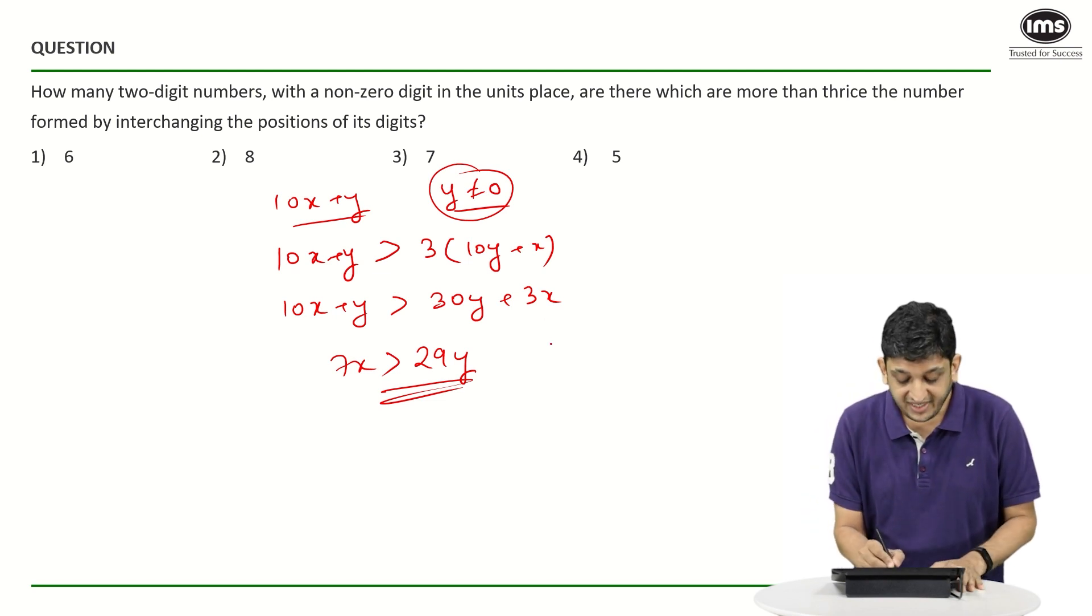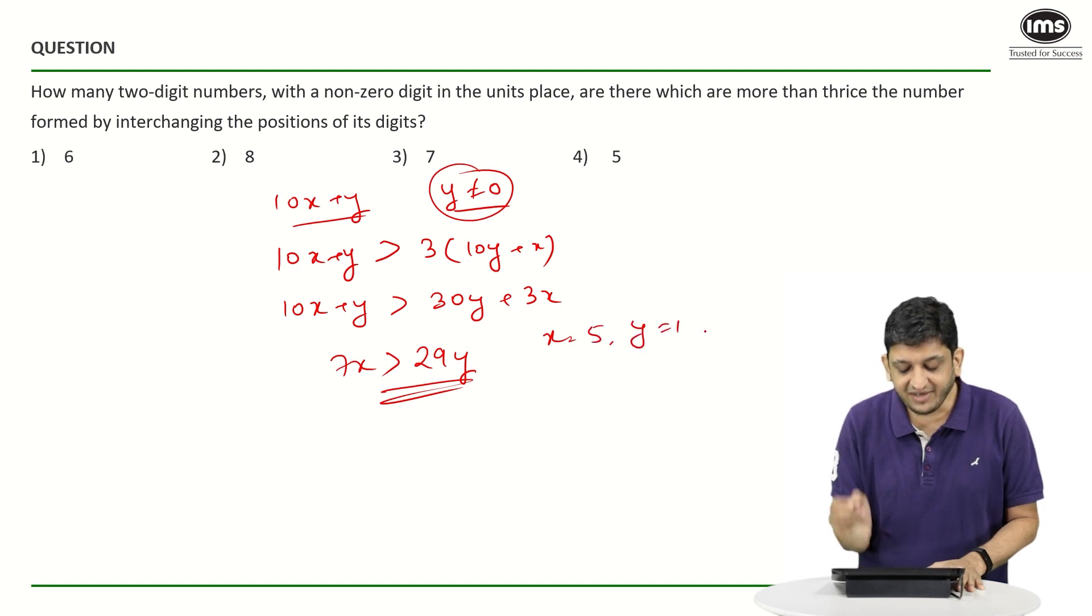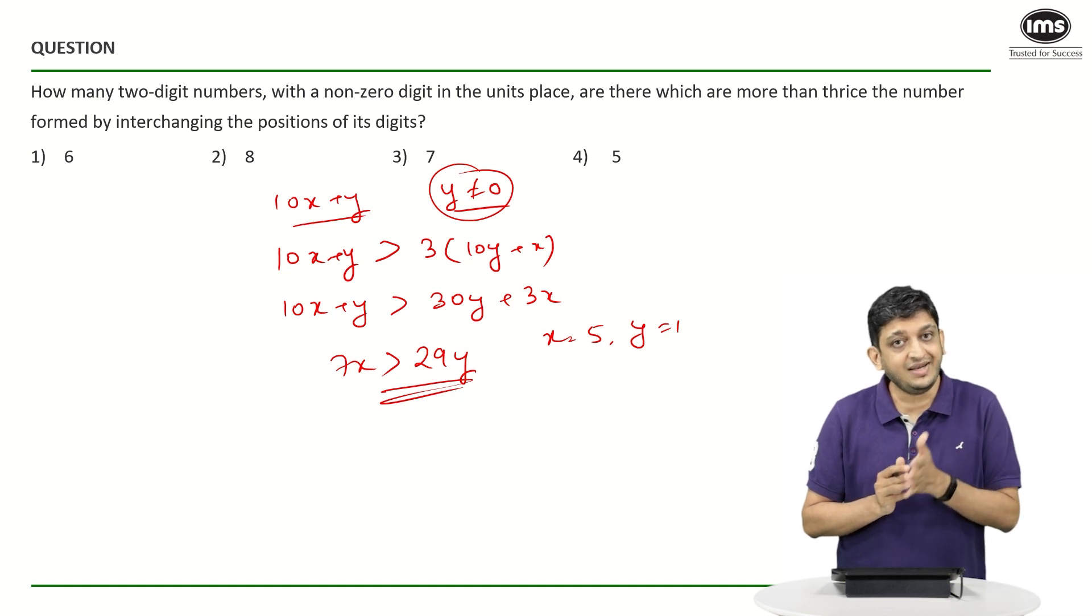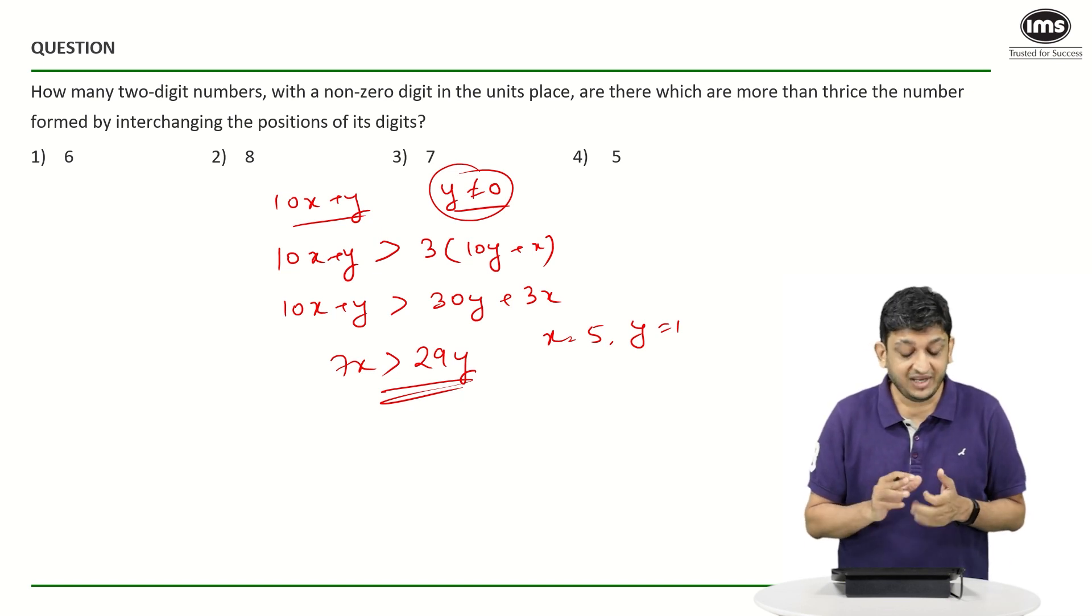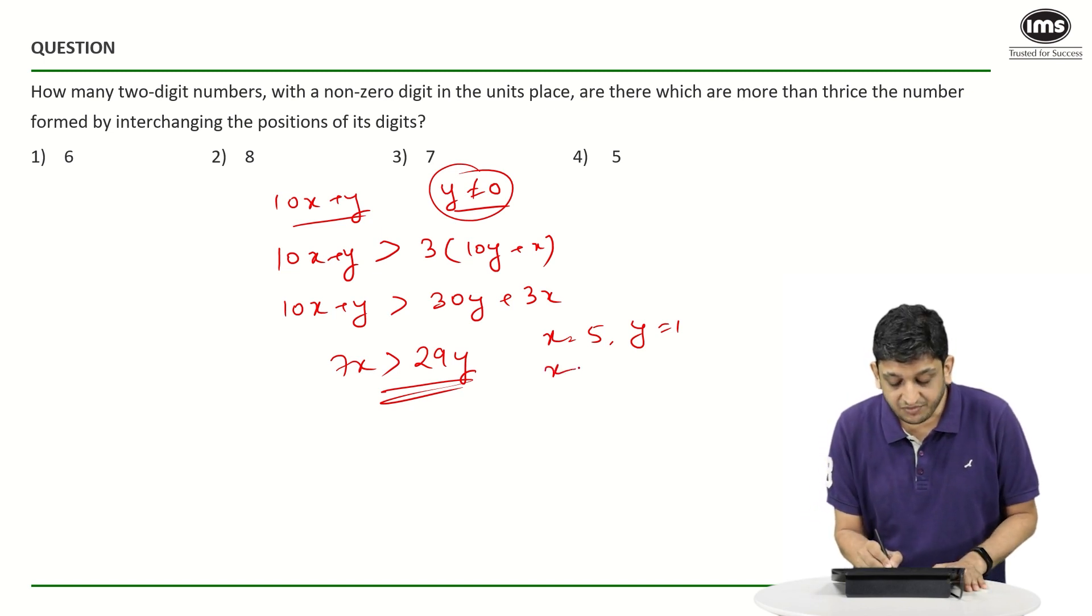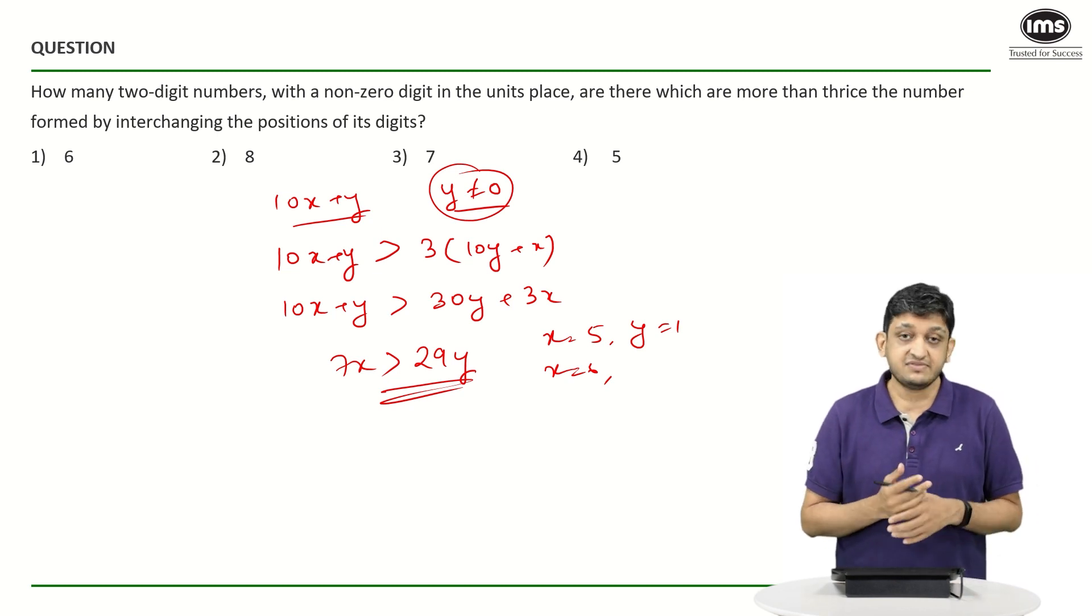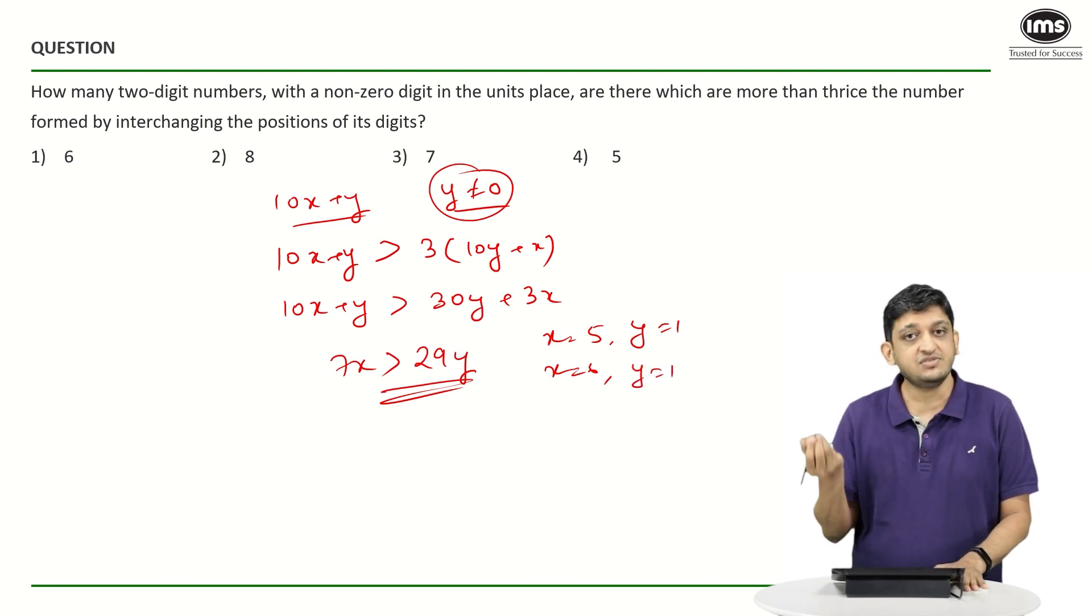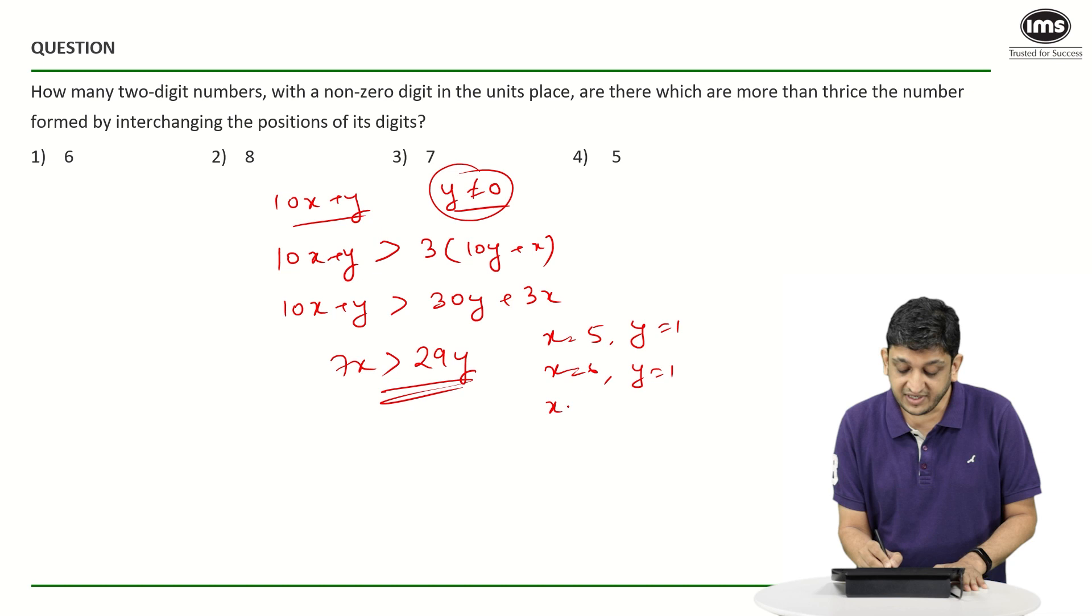When X equals 5, Y can take only one value. When X is equal to 5, Y can take only one value, that is 1 itself, because if Y becomes 2, 29 times 2 is 58, which violates the inequality. What happens if X equals 6? When X equals 6, we will have 42 greater than 29Y, which will mean that Y can again take only one value, that is 1 itself.